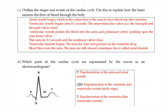Now, the stages of the cardiac cycle. There are about three key stages — or five if you want to expand it. It starts with atrial systole. Remember: systole means contraction and diastole means relaxation. So atrial systole means the atria contract and push blood down into the ventricles, since the atria are at the top.